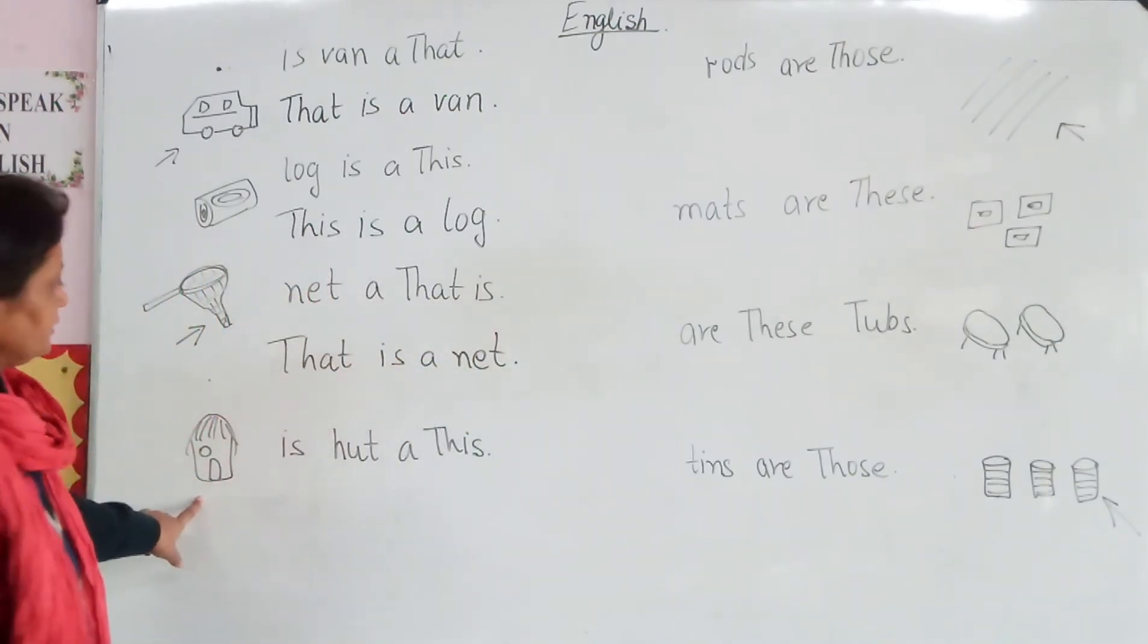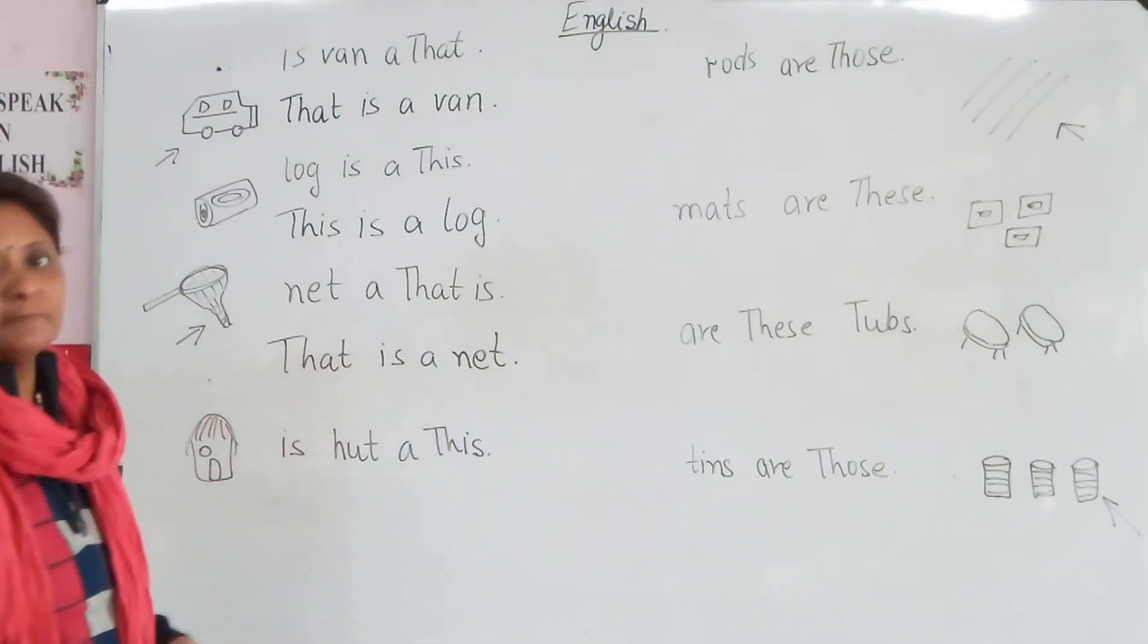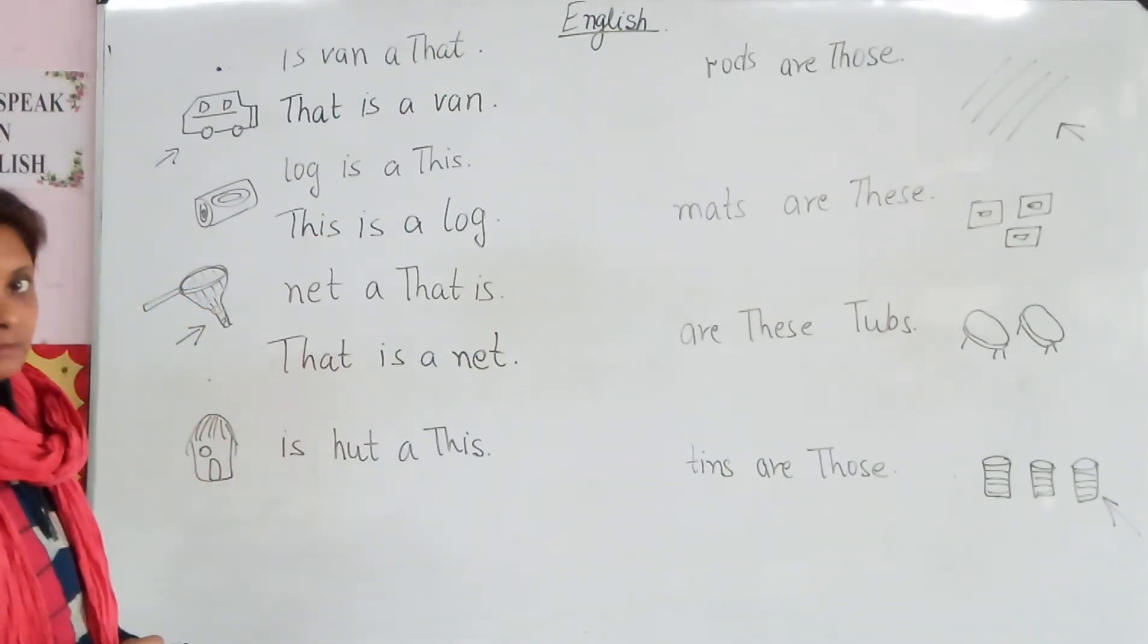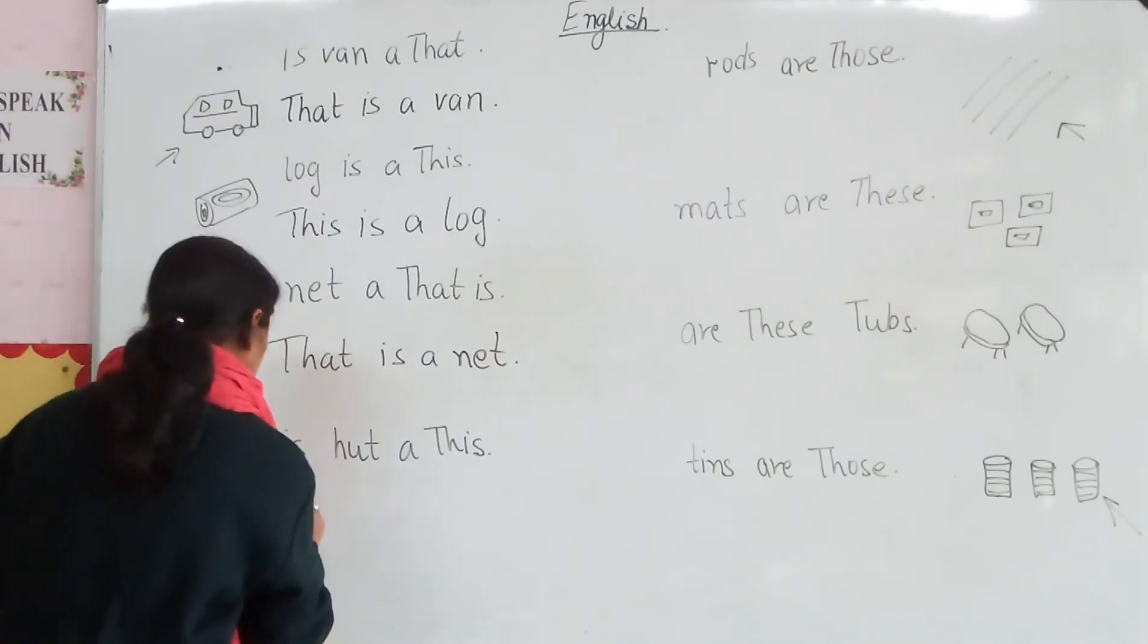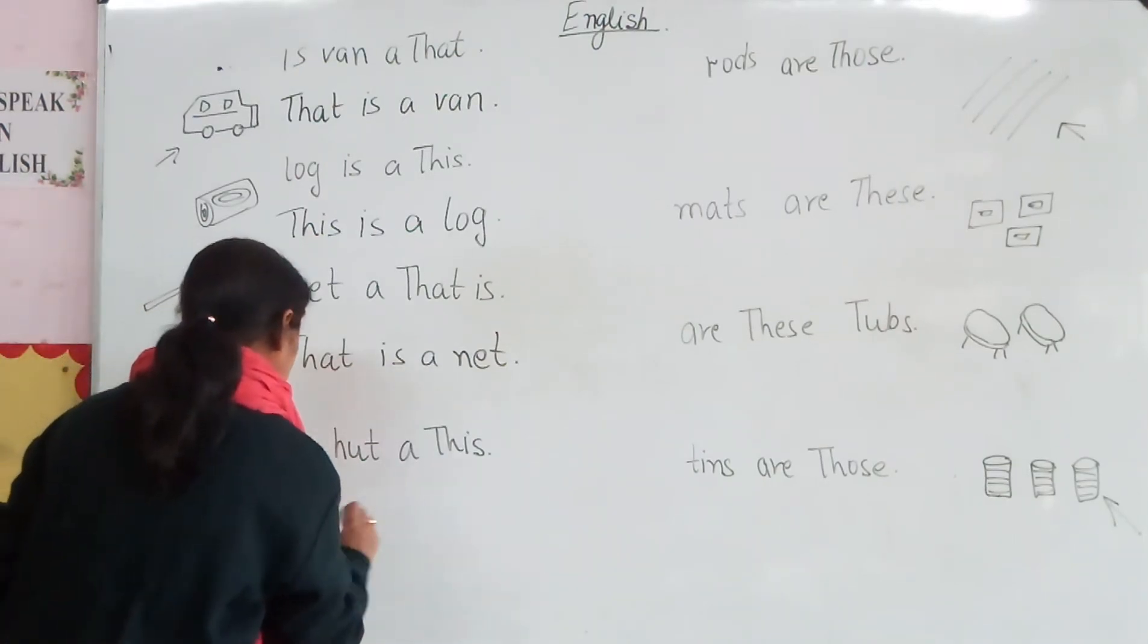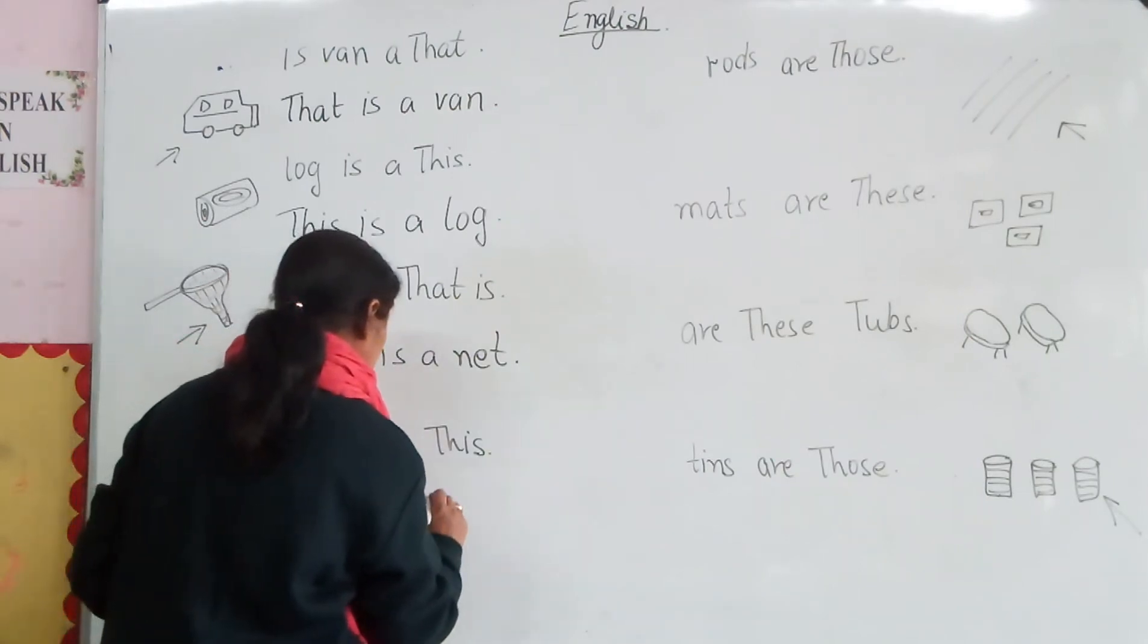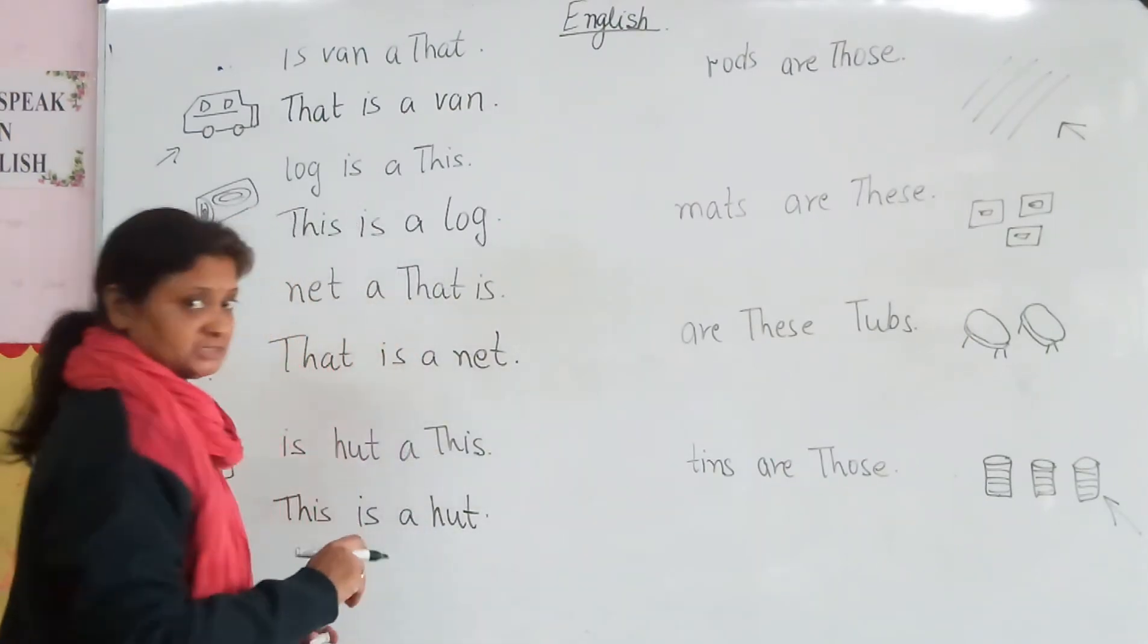This is the picture of a heart. Is heart or this? This is a heart. This is a heart.